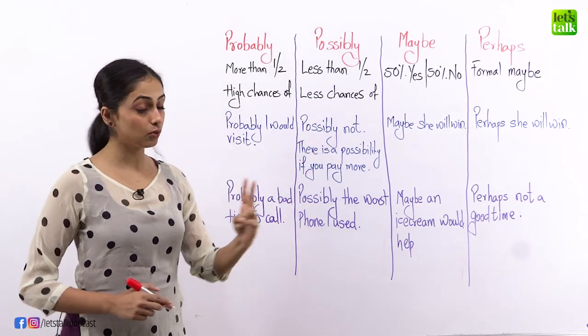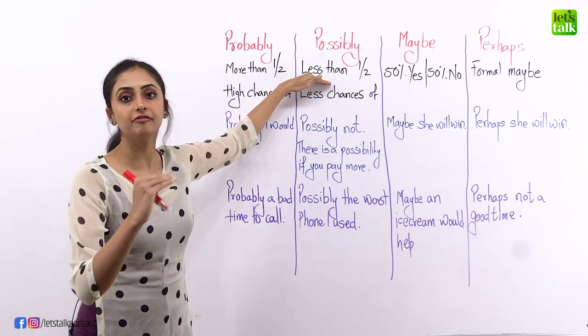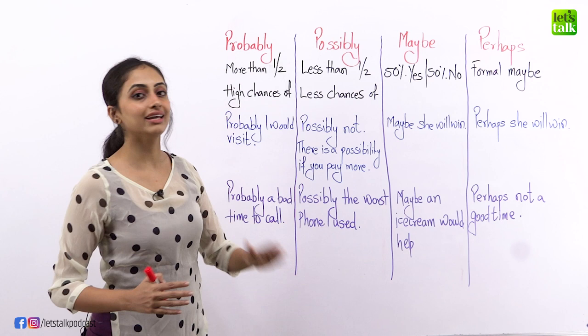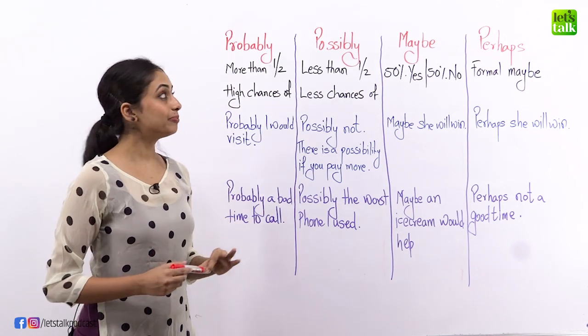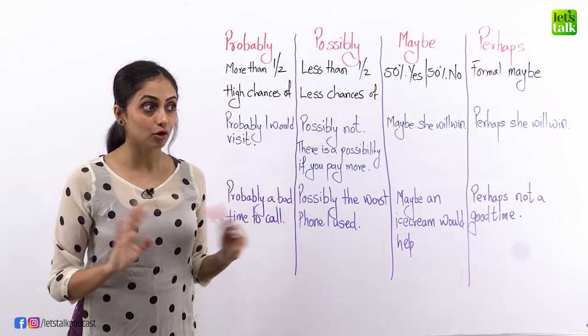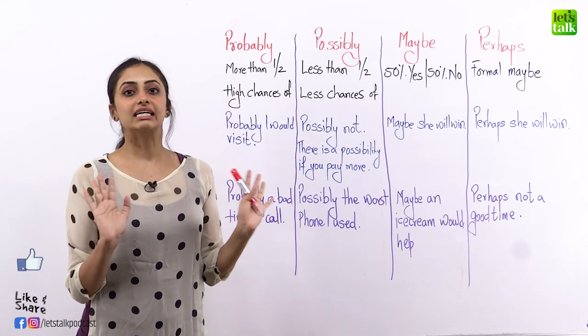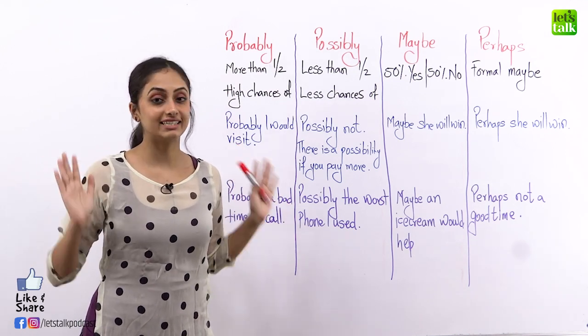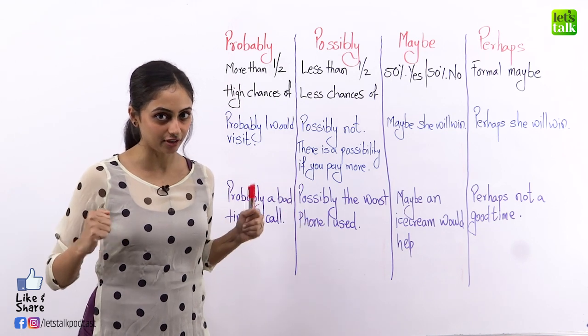Possibly, second word for the day, less than 50% chances, half chances, less chances of something happening. I'm possibly on a diet, I'm not sure yet, that means there is very less chance that I'm going to diet, I will definitely eat a pizza today.